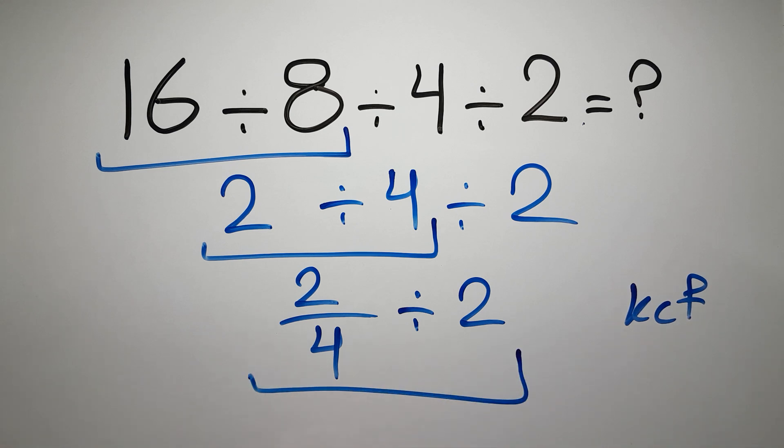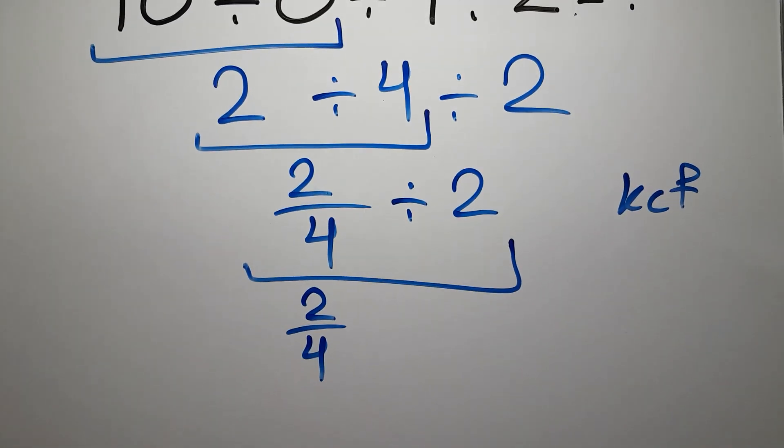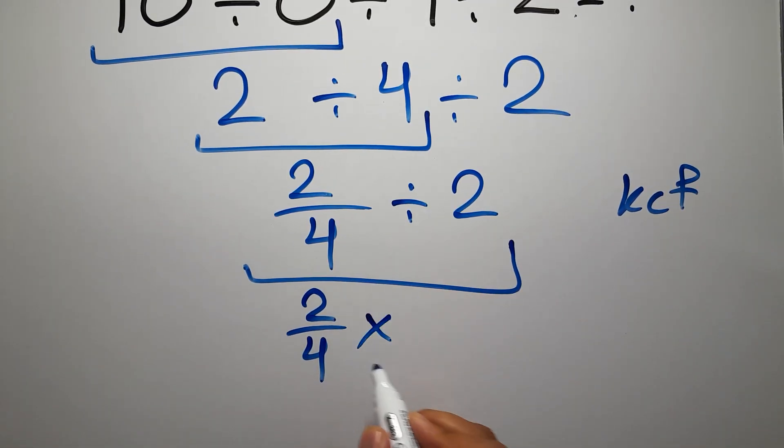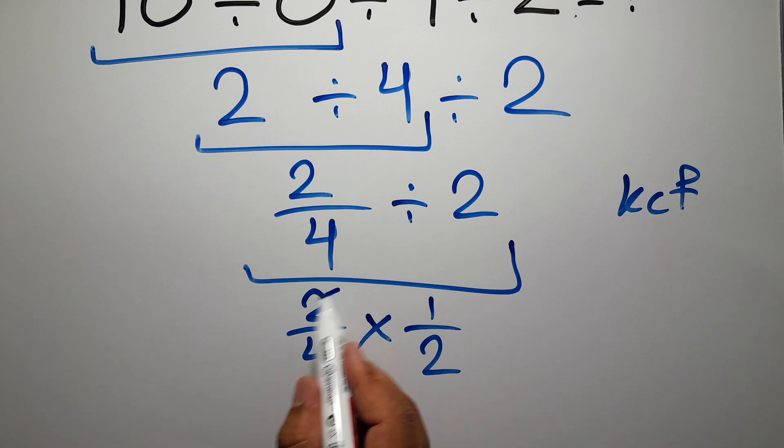Keep the first fraction 2 over 4, change division to multiplication, and flip the second fraction. So we have 2 over 4 times 1 over 2. We can easily cancel this 2 and this 2.